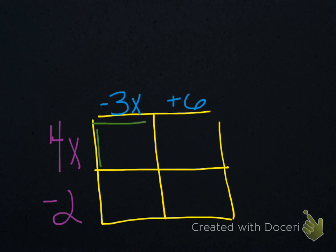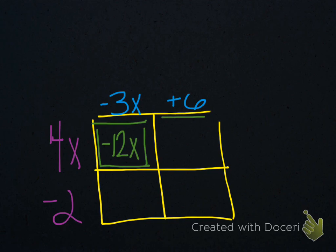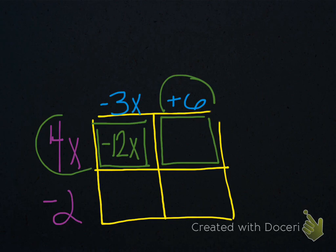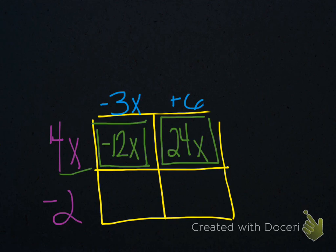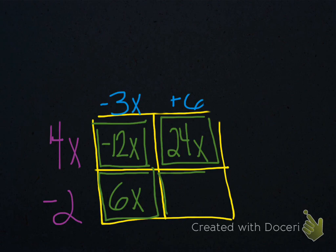To fill in each box, multiply the number above it and the number to the left of it. So that would be negative 3x times 4x, which is negative 12x squared. Over in the next box, 6 and 4x come together to give 24x. Then negative 2 times negative 3x gives positive 6x, and lastly 6 times negative 2 gives negative 12.